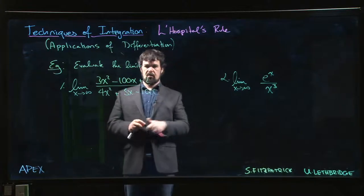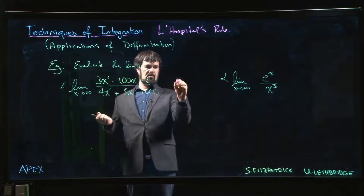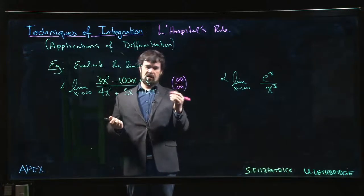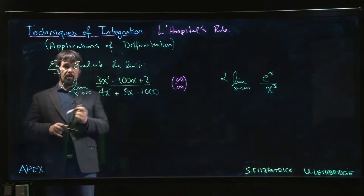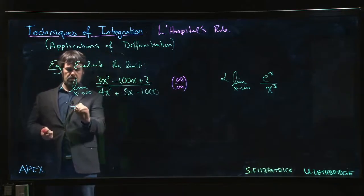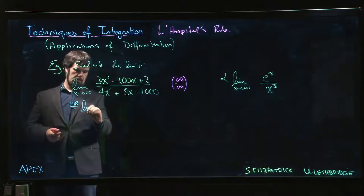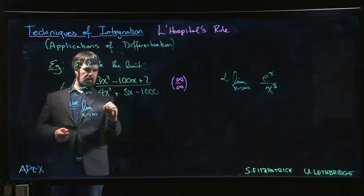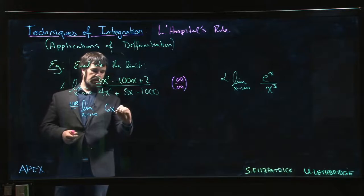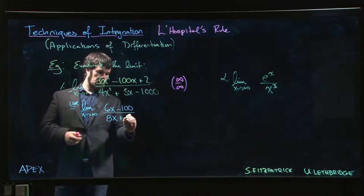But you know, you have a new toy, you want to play with it. So you decide, hey, let's give it a try. And we look at this and we say, okay, this is infinity over infinity, so we're going to use L'Hopital's rule to evaluate the limit. So we get the limit as x going to infinity: 6x minus 100 over 8x plus 5.